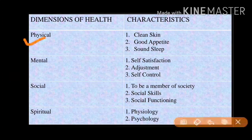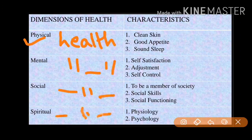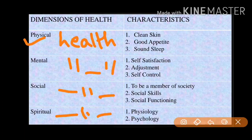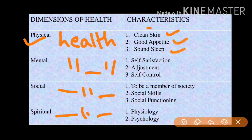The first dimension is physical health. Physical health deals with the normal functioning and growth of all parts of the body as a whole. A few characteristics of physical health are clean skin, good appetite, and sound sleep. If a person possesses these characteristics, that person is considered physically healthy.